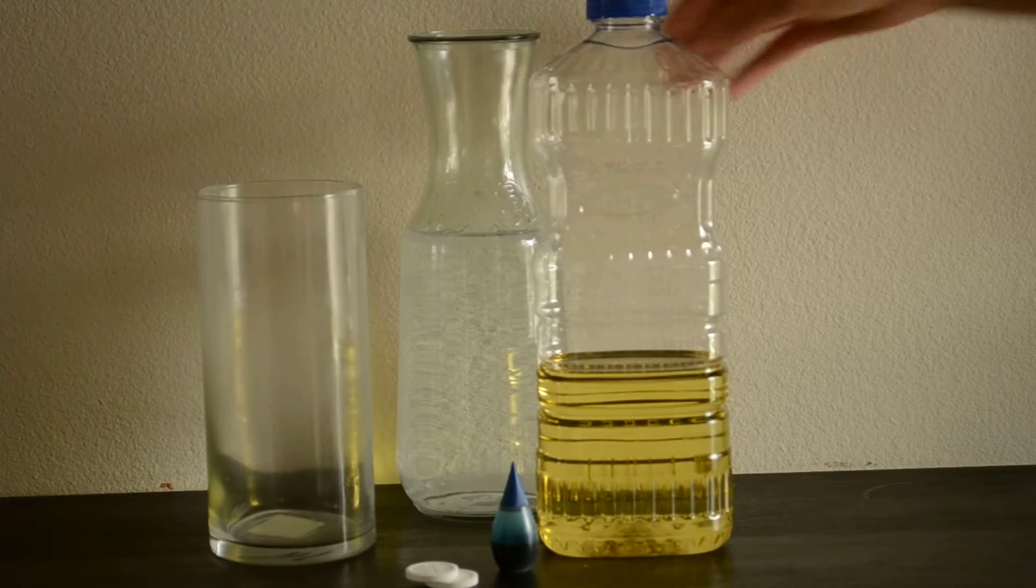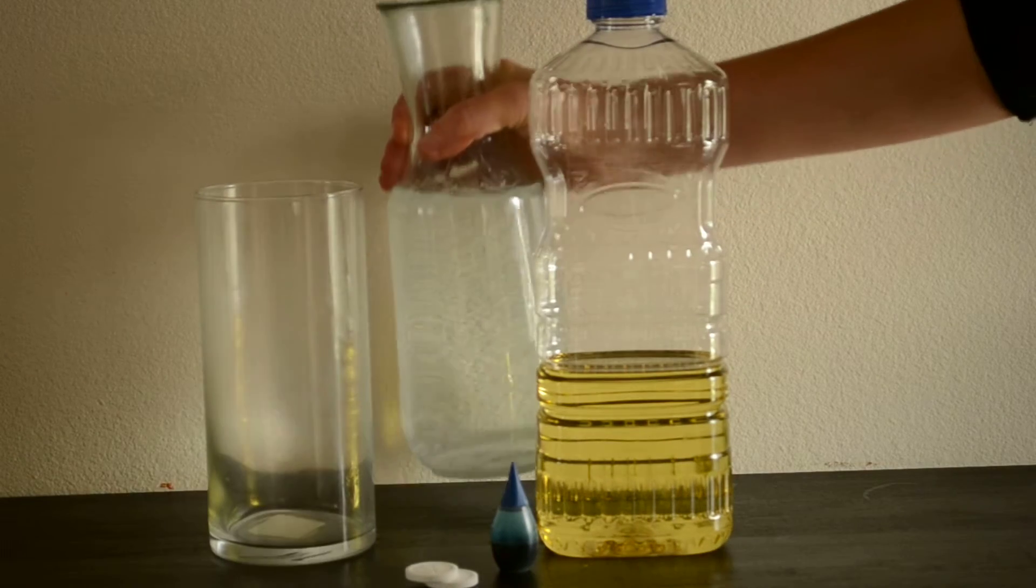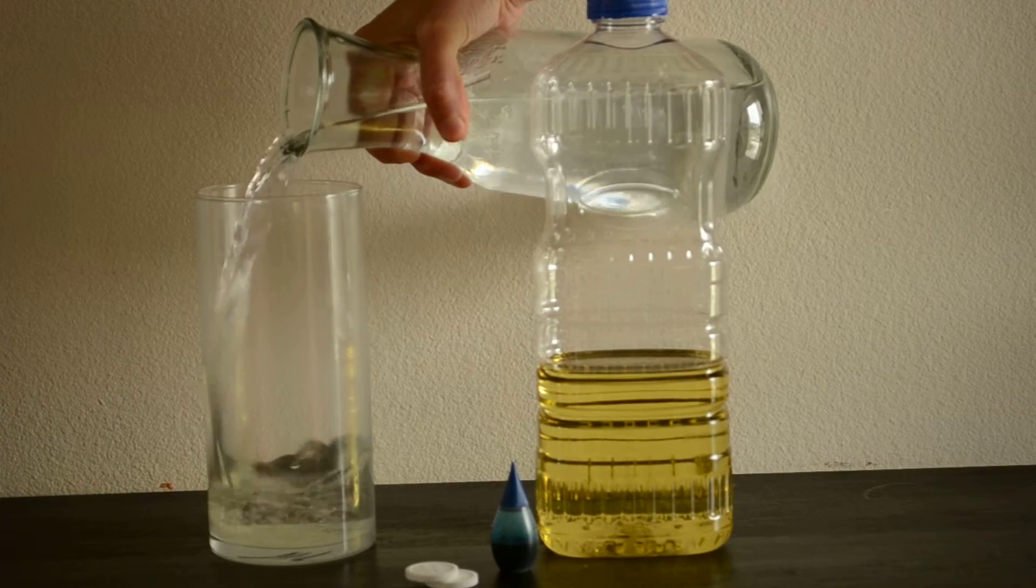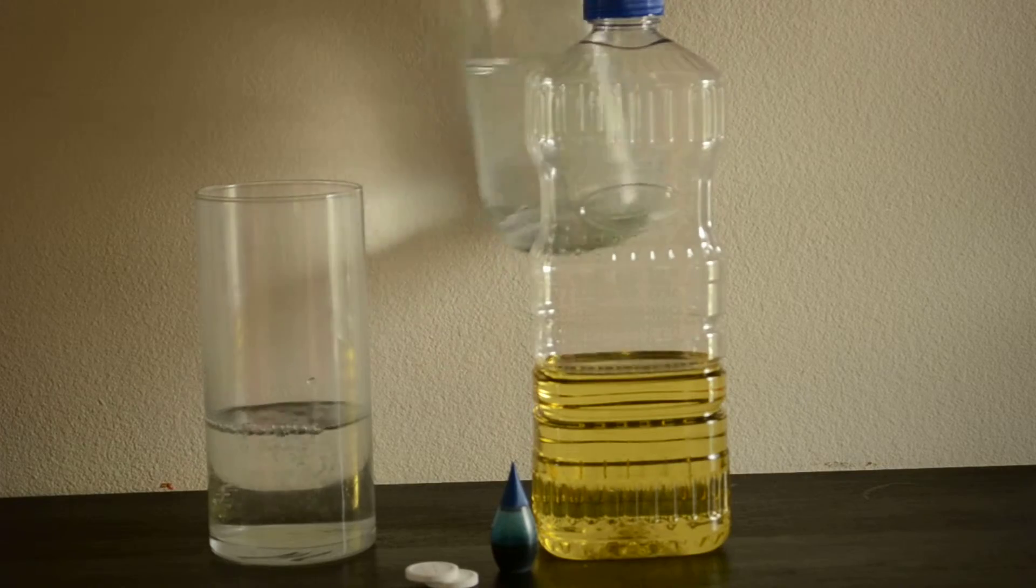Alright, let's get started. We're going to make a homemade lava lamp. First thing we're going to do is we're going to pour in some water. Let's get a little bit of water in there.